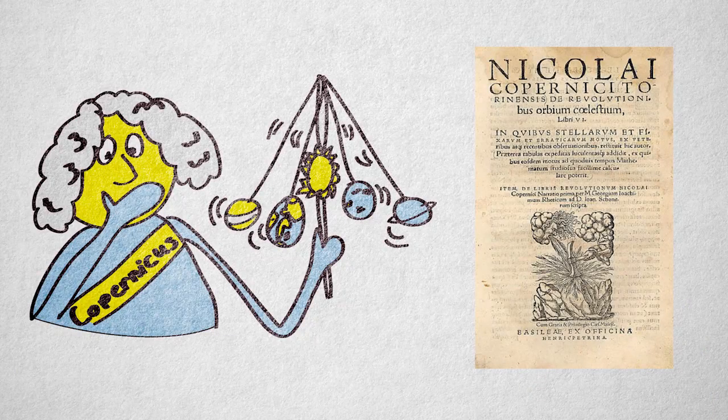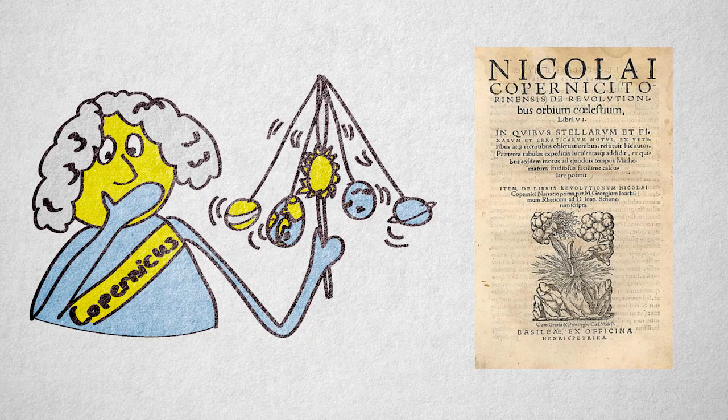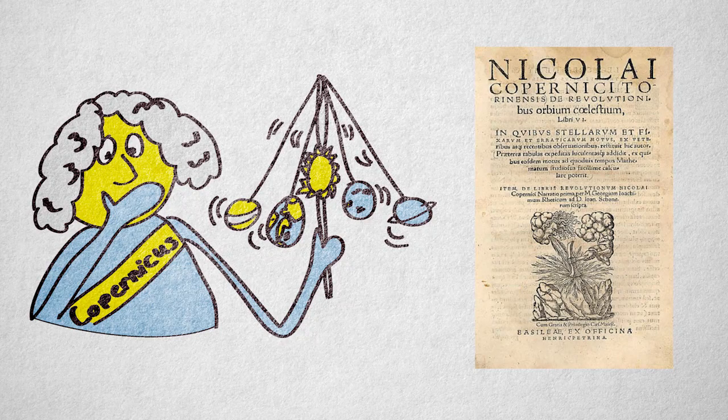Now, this didn't exactly agree with religious doctrine. The Church accepted Aristotle and Ptolemy's model with Earth at the center of the universe. Many historians believe Copernicus was afraid to publish this work because he feared the Church would punish him for contradicting their doctrine.